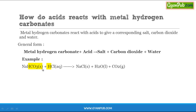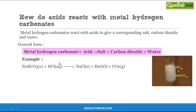The displaced hydrogen reacts with the hydrogen carbonate ion (HCO3⁻) to form water and carbon dioxide gas. So the displaced hydrogen reacts with the negative ion of the metal hydrogen carbonate to produce water and CO2. The result is a solution of sodium chloride and water, along with evolution of carbon dioxide.